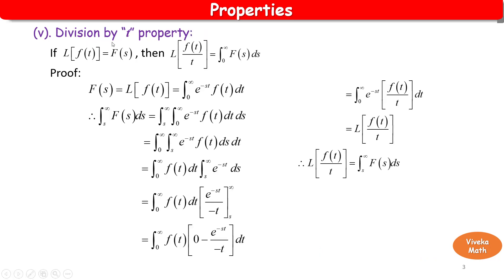Fifth property: Division by t property. Statement: if L of f(t) is equal to F(s), then L of f(t) by t is equal to the integral from s to infinity of F(s) ds. Standard notation: L of f(t) equals F(s), so f(t) is replaced by f(t) divided by t, and the answer is the integral from s to infinity of F(s) ds.